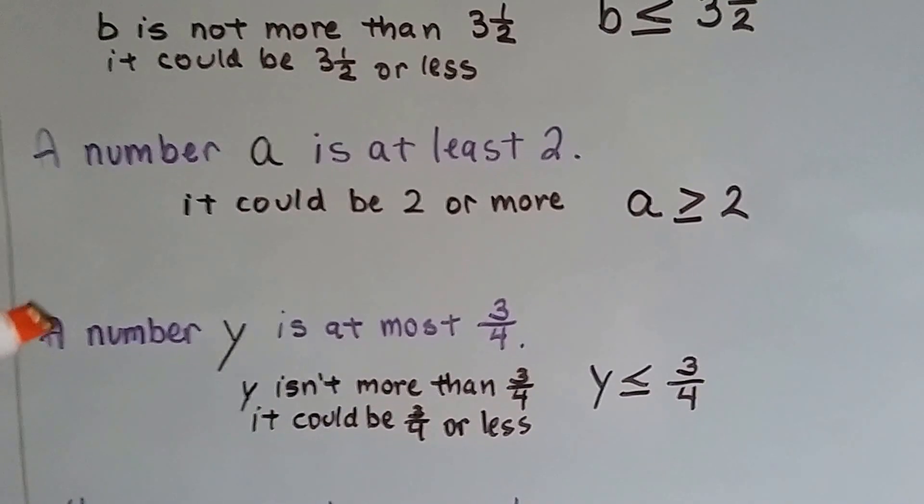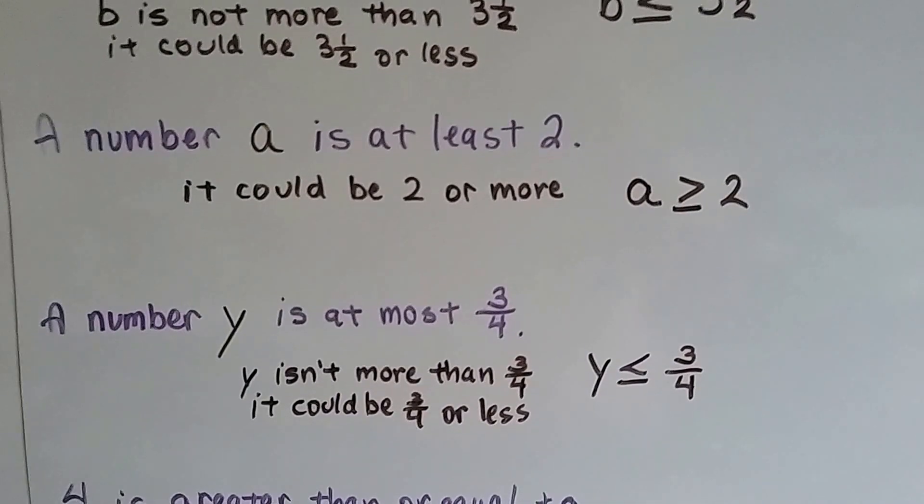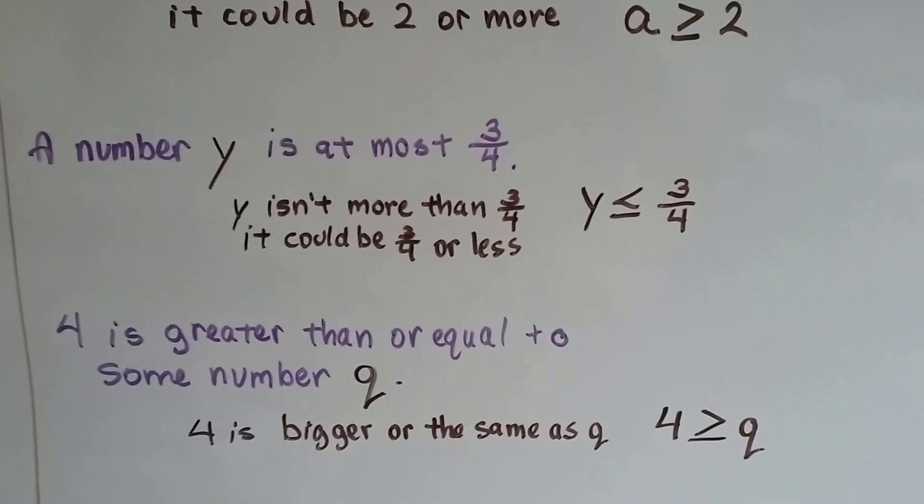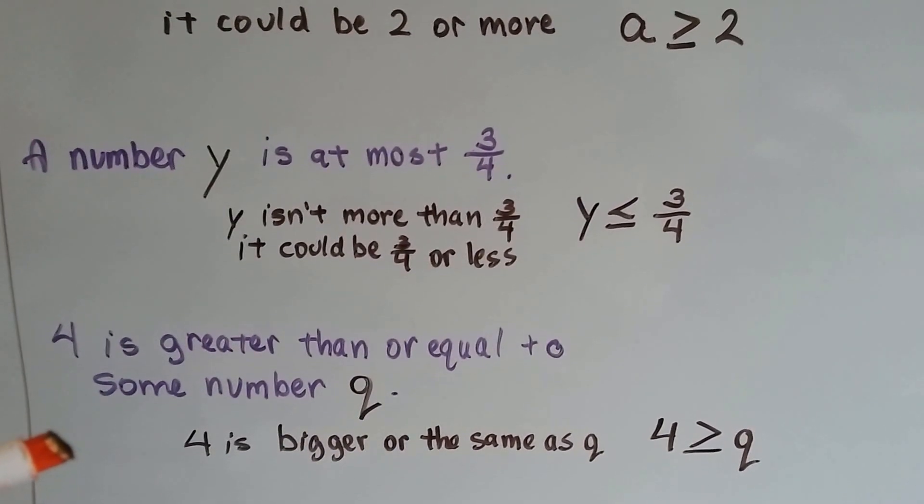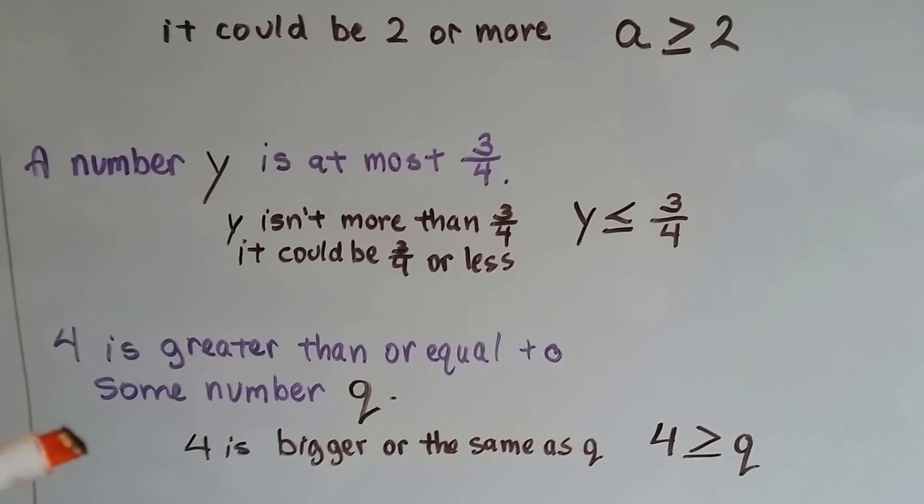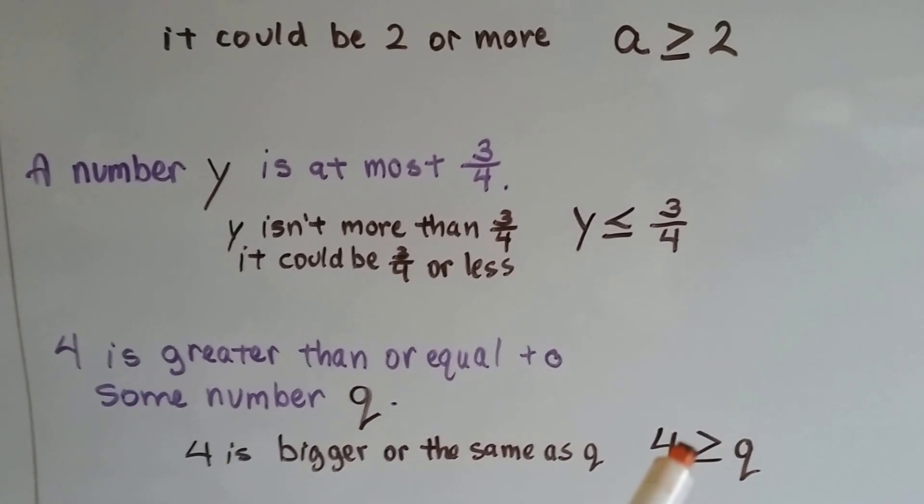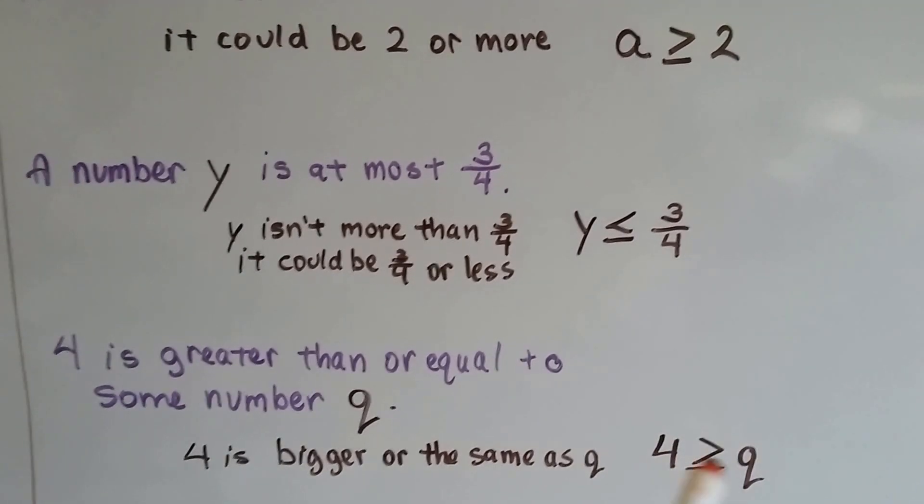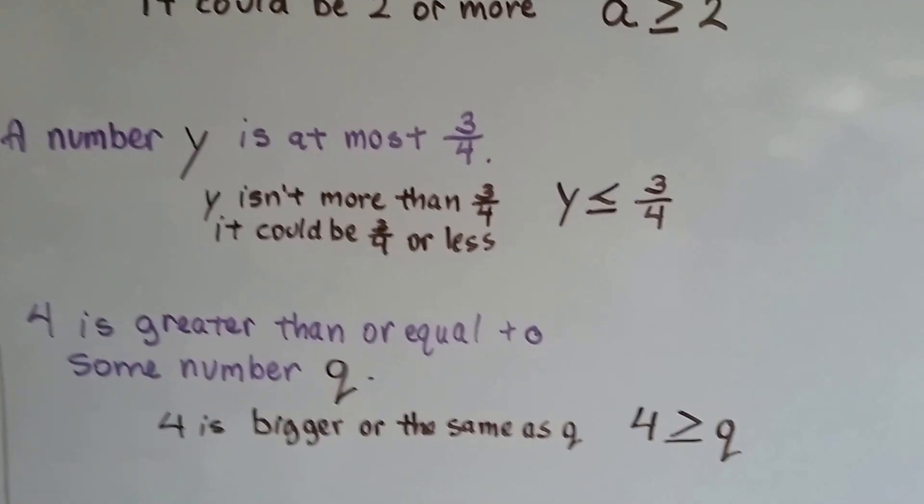If you have trouble figuring out what it's saying, try plugging something real in like the money or the candy to see if it makes sense. 4 is greater than or equal to some number Q. Well, that pretty much sounds like we're reading it, doesn't it? 4 is greater than or equal to Q, some number Q. And it just writes out just the way it's being read.